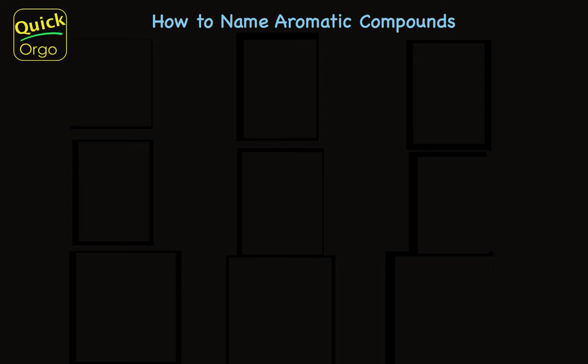The nomenclature for aromatic compounds is really quite straightforward — that's the good news. The bad news is that there are a few structures you absolutely must memorize, because these structures turn up in common names, and the systematic approach to naming also uses these same names.